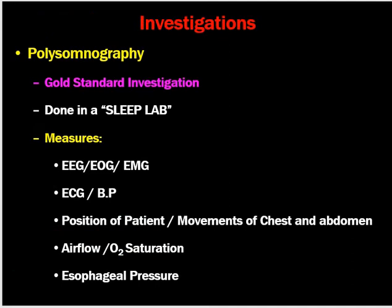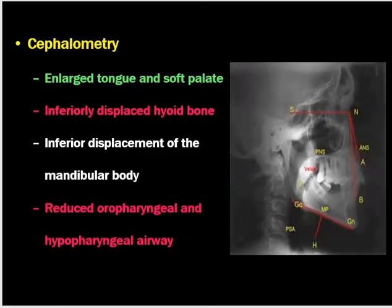Polysomnography is the gold standard investigation for OSA, performed in a sleep lab. It measures EEG, EOG, EMG, ECG, blood pressure, patient position, chest and abdominal movement, airflow, oxygen saturation, and esophageal pressure. These parameters are monitored overnight while the patient is in the sleep lab or ICU.